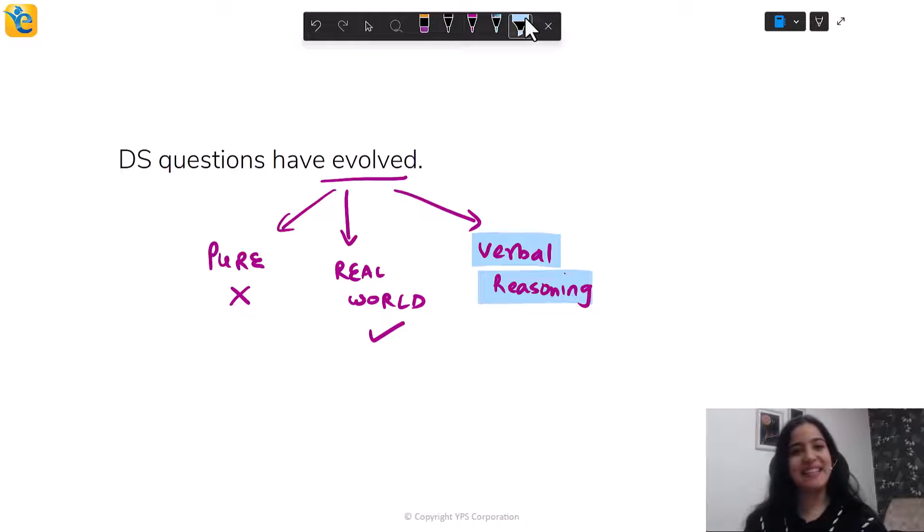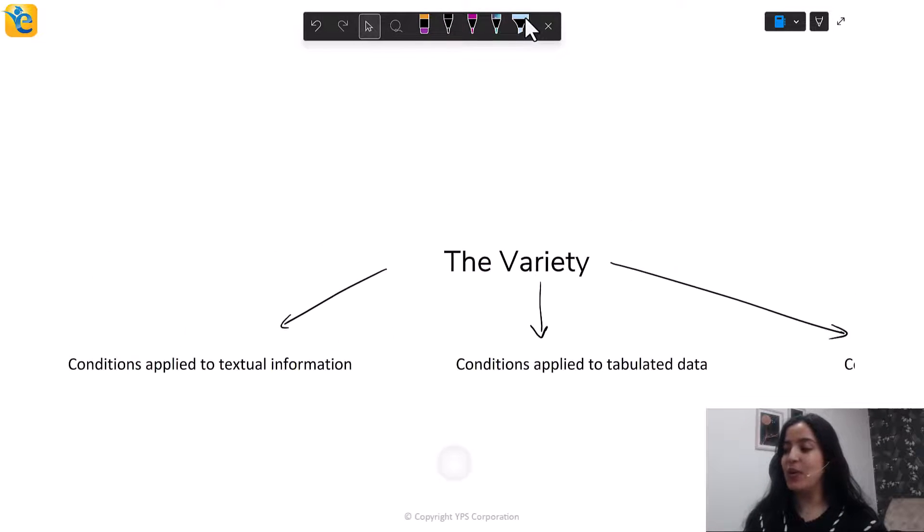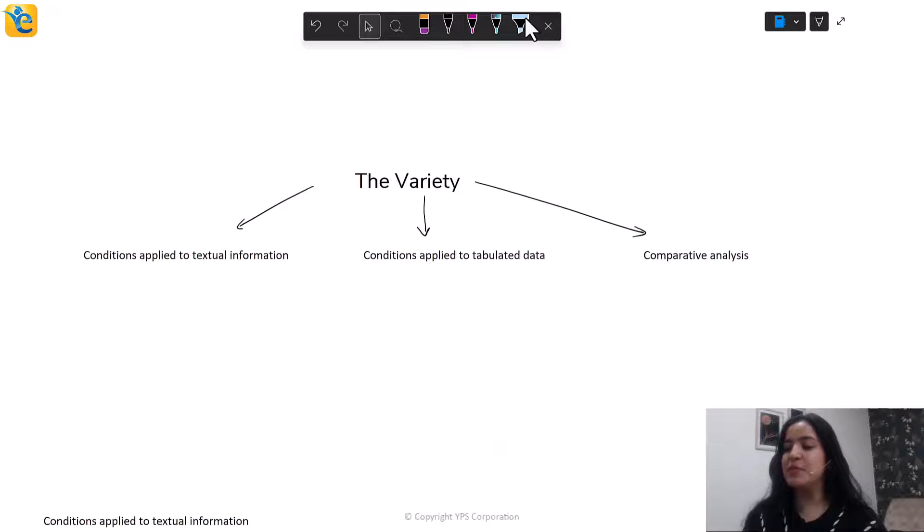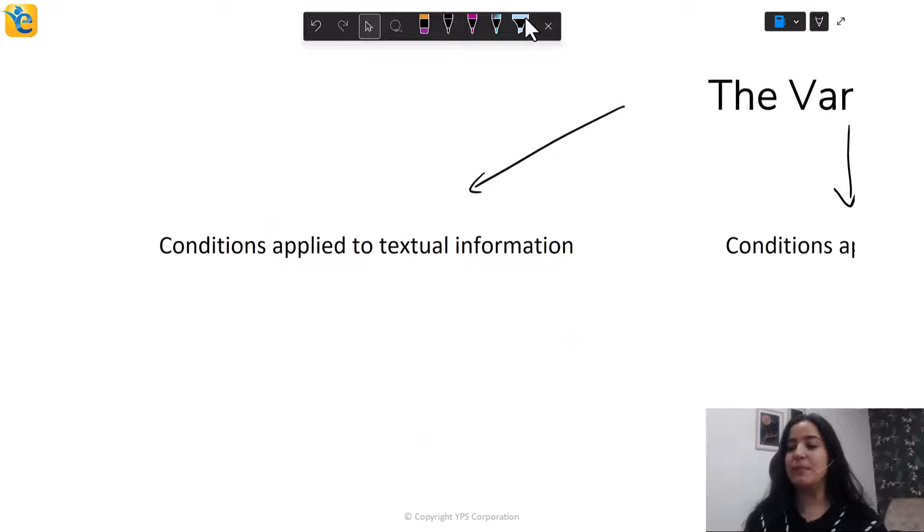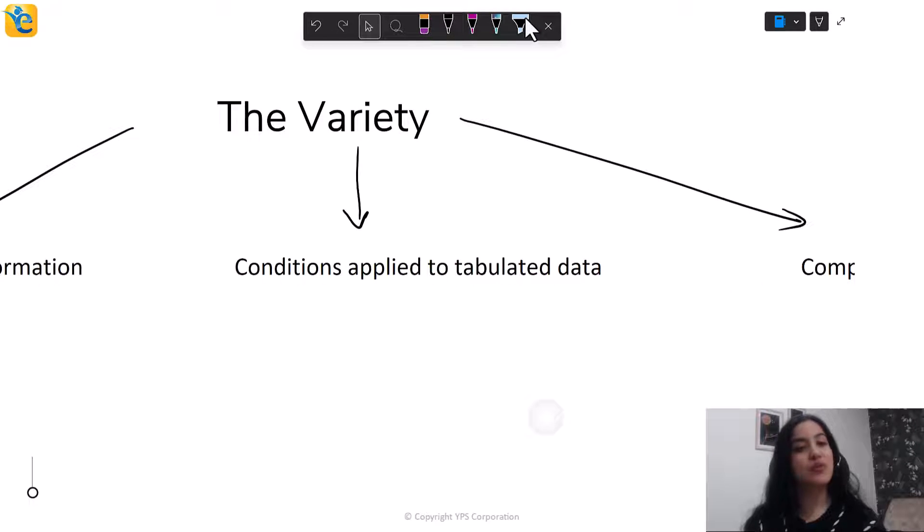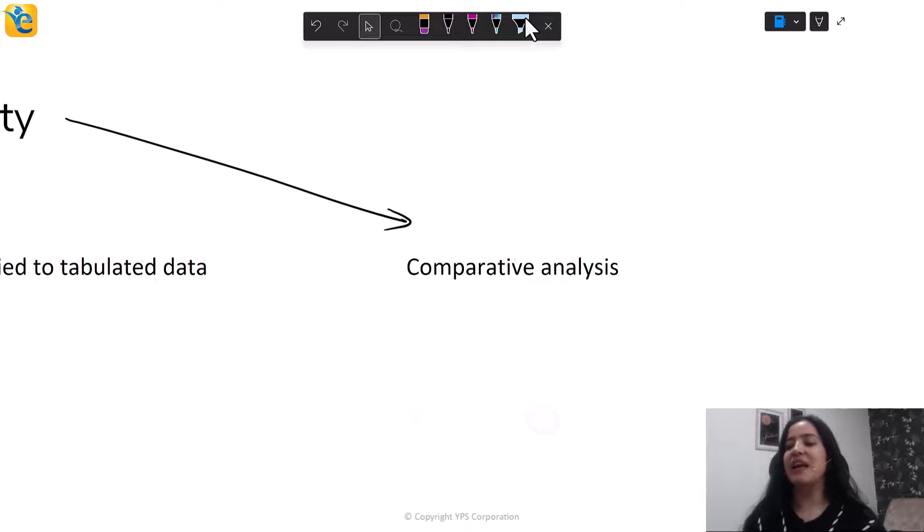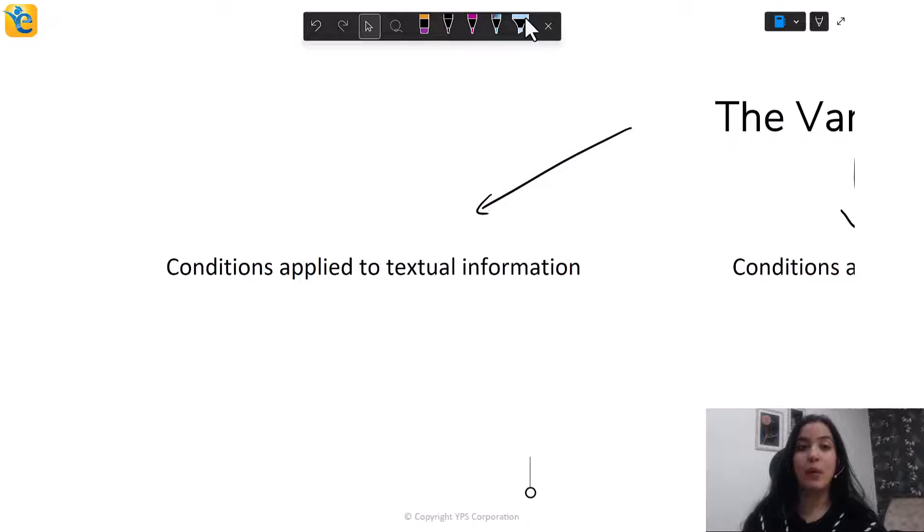Let's get started. First thing I'm going to discuss is the variety of verbal questions that you will have. So look at this. There are these three types of questions that you can have in verbal reasoning. First is conditions applied to textual information. Then you have conditions applied to tabulated data. And then finally, comparative analysis. Don't worry if the terms don't make sense to you. We will discuss each type one by one.